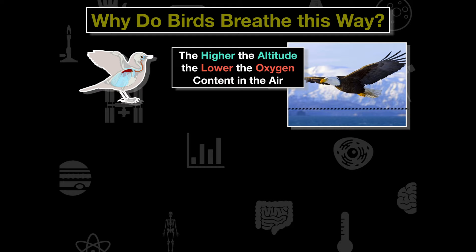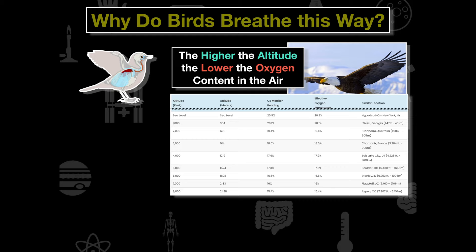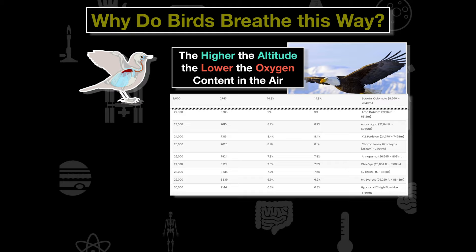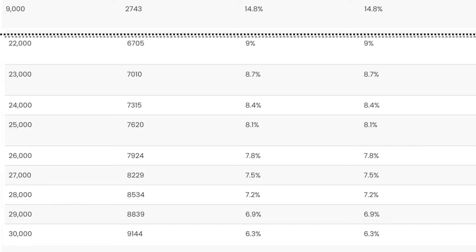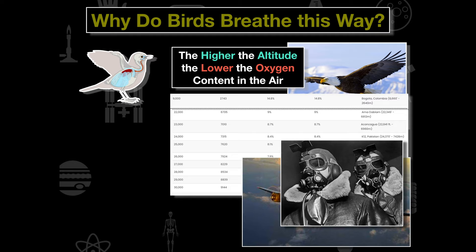Why do birds breathe this way? The higher the altitude, the lower the oxygen content in the air. At sea level the atmosphere consists of about 20.9% oxygen, but at nearly 30,000 feet the oxygen content drops to only 6.3%. Think of WWII bomber crews wearing sheep-lined fleece coats to stay warm at altitude and oxygen masks to breathe — before pressurized cabins, those masks were critical.